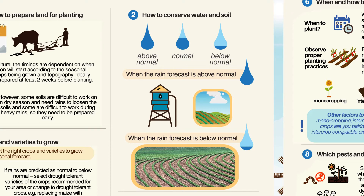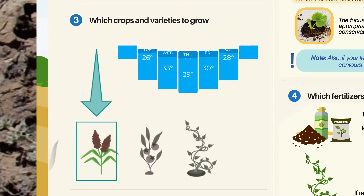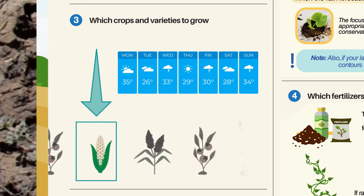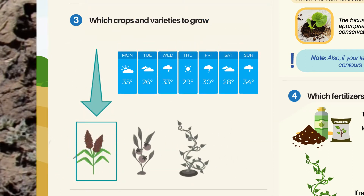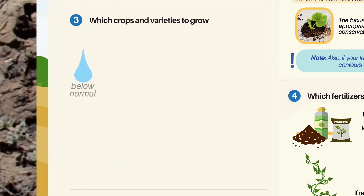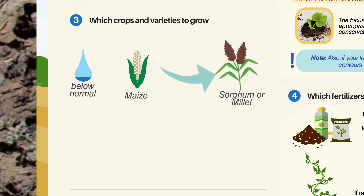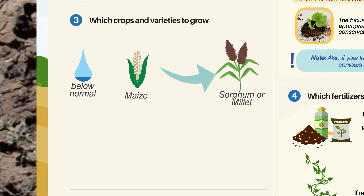Note: if your land is sloping, consider adding contours to prevent soil erosion. Which Crops and Varieties to Grow: You need to select the right crops and varieties to grow based on seasonal forecasts. If rains are predicted as normal to below normal, select drought-tolerant varieties of the crops recommended for your area, or change to drought-tolerant crops — replacing maize with sorghum and millet.